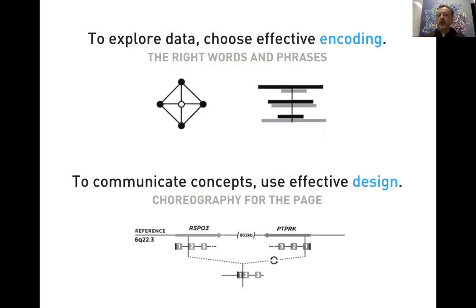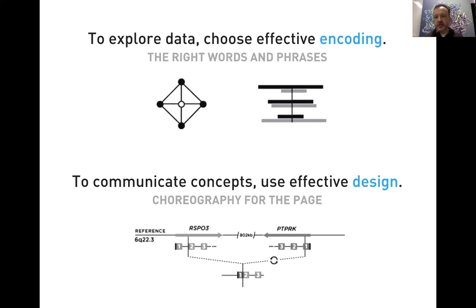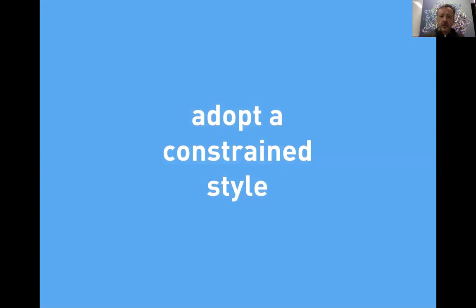To distinguish two things: encoding and design. The encoding is the graphical recipe to take data and transform it into shapes on the page — thinking in terms of written word, these would be the right words and phrases. But often that's not enough; you have a number of encodings, a number of things you want to say. To communicate these ideas and how they're related, you use effective design — think of it as choreography for the page. The design moves the encodings around like actors in and out of a scene at appropriate times.